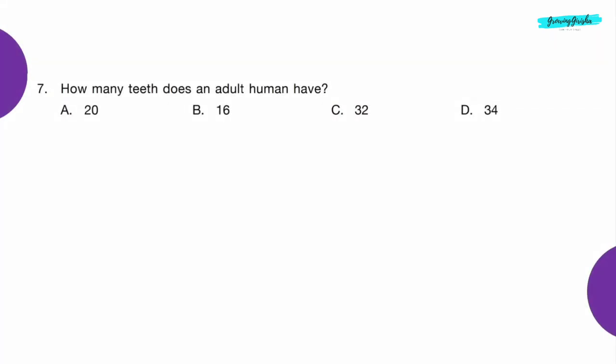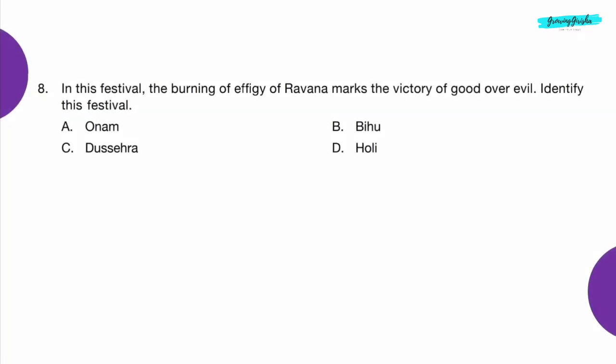Question 7: How many teeth does an adult human have? Option C — 32.